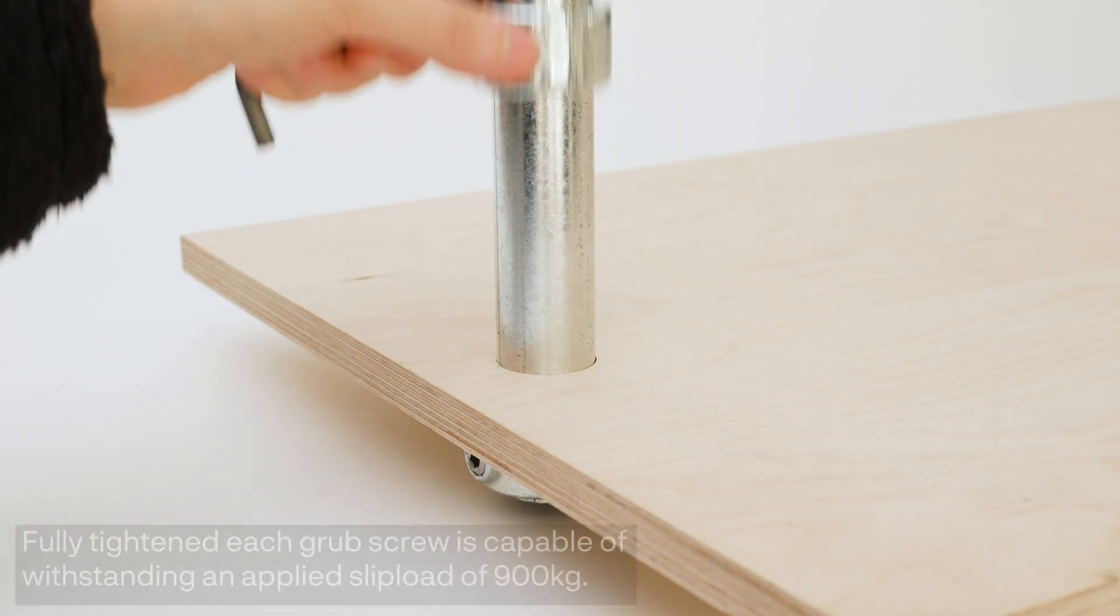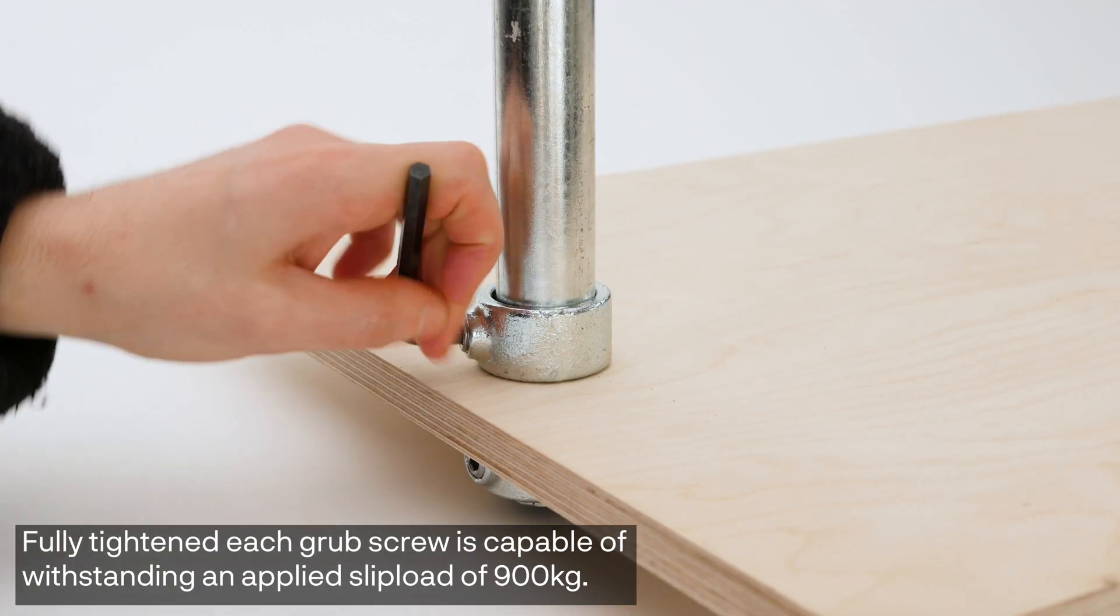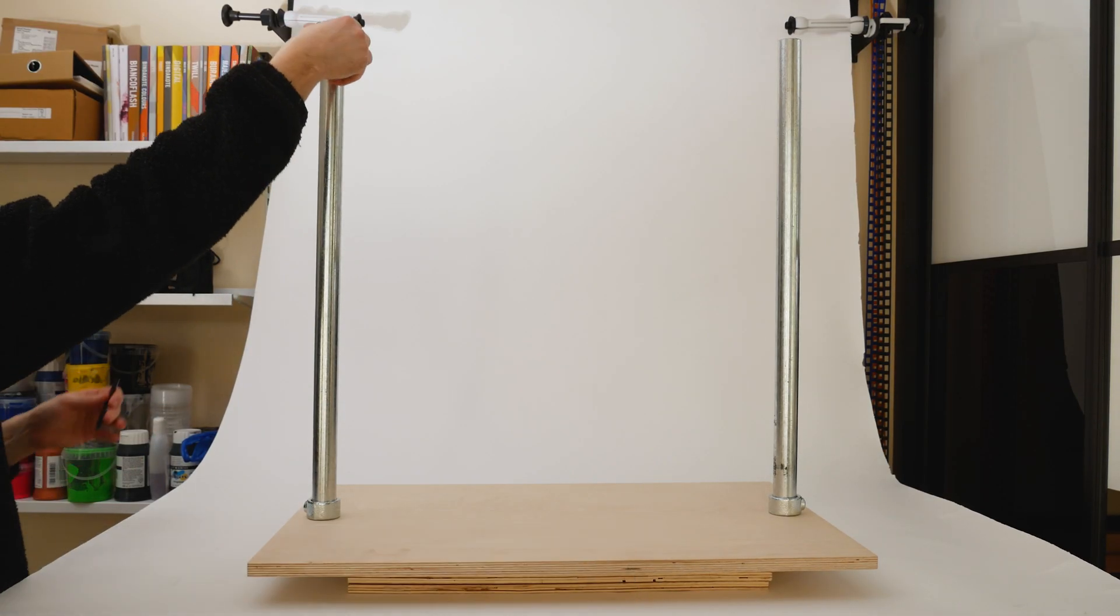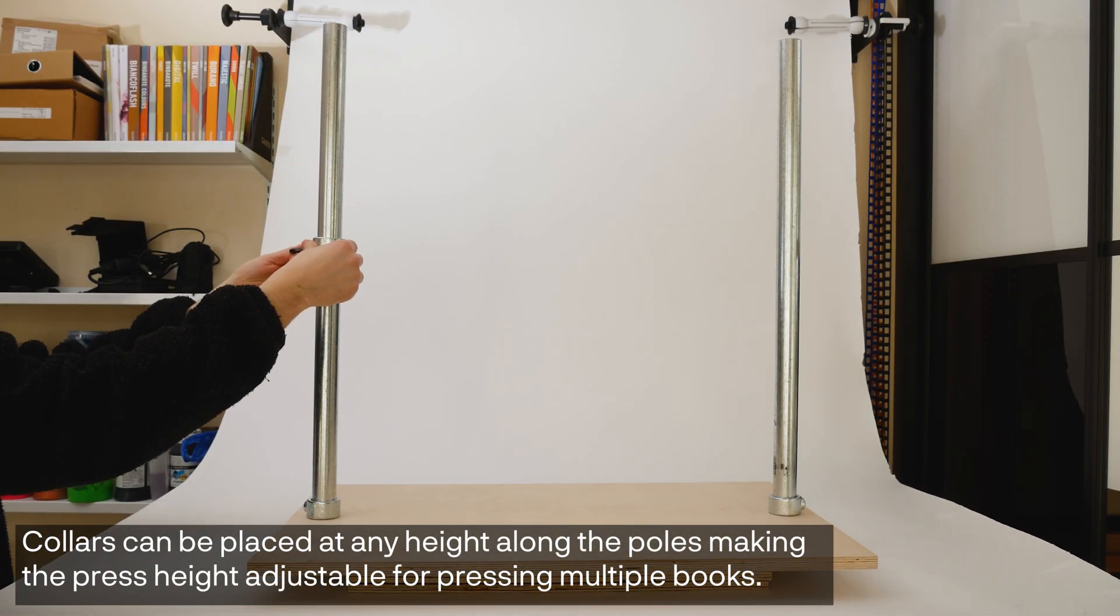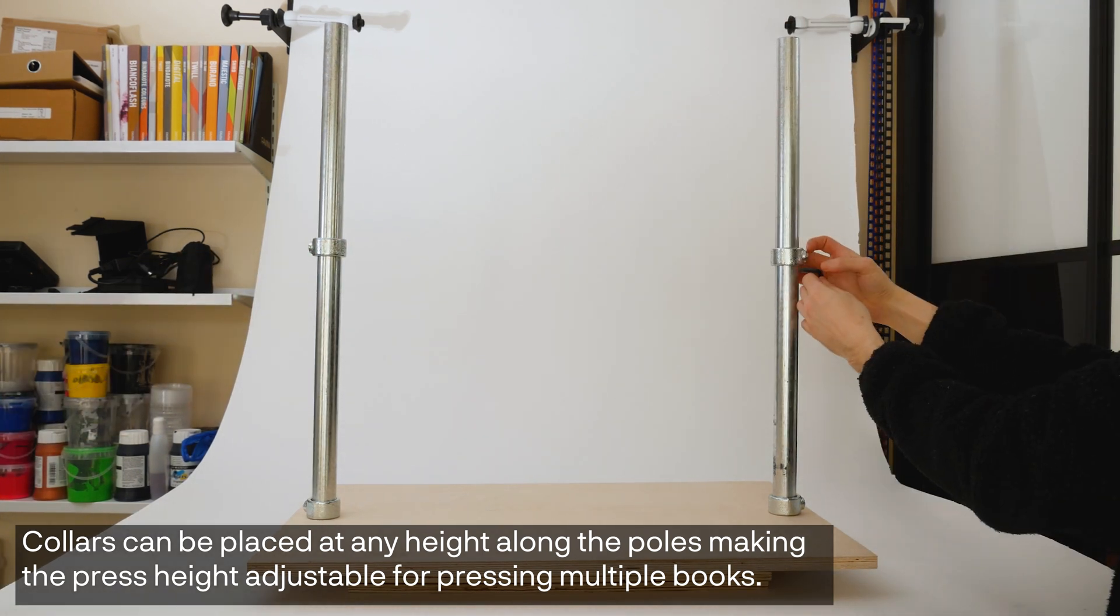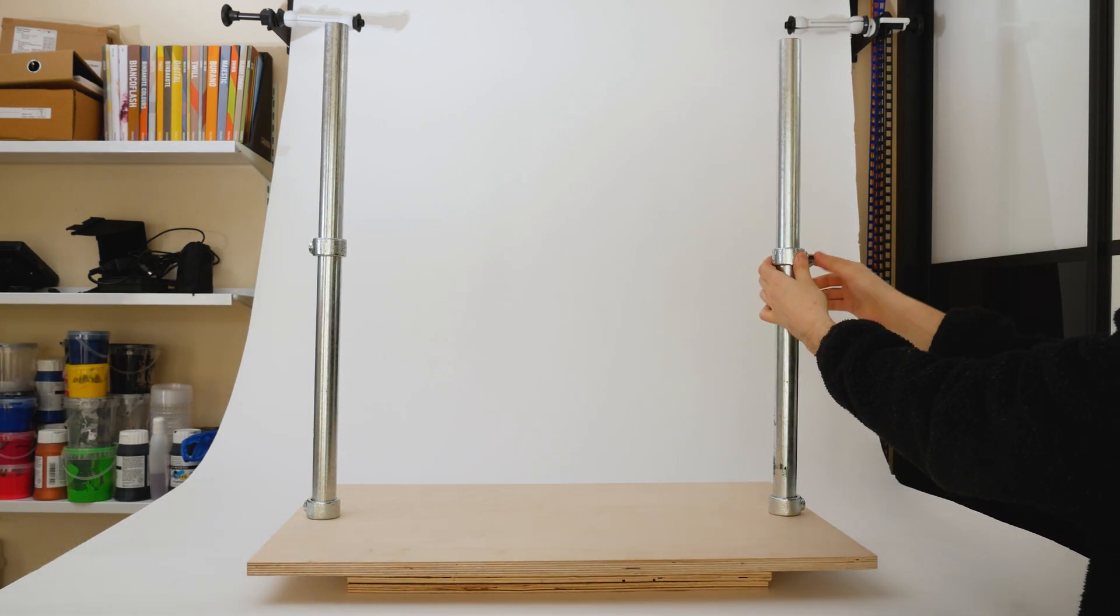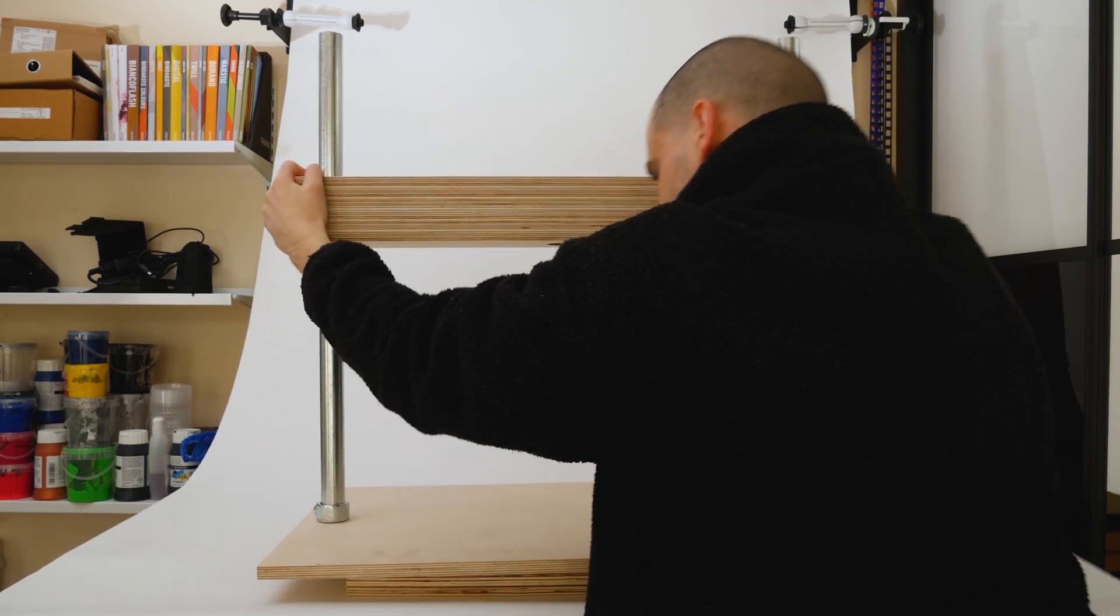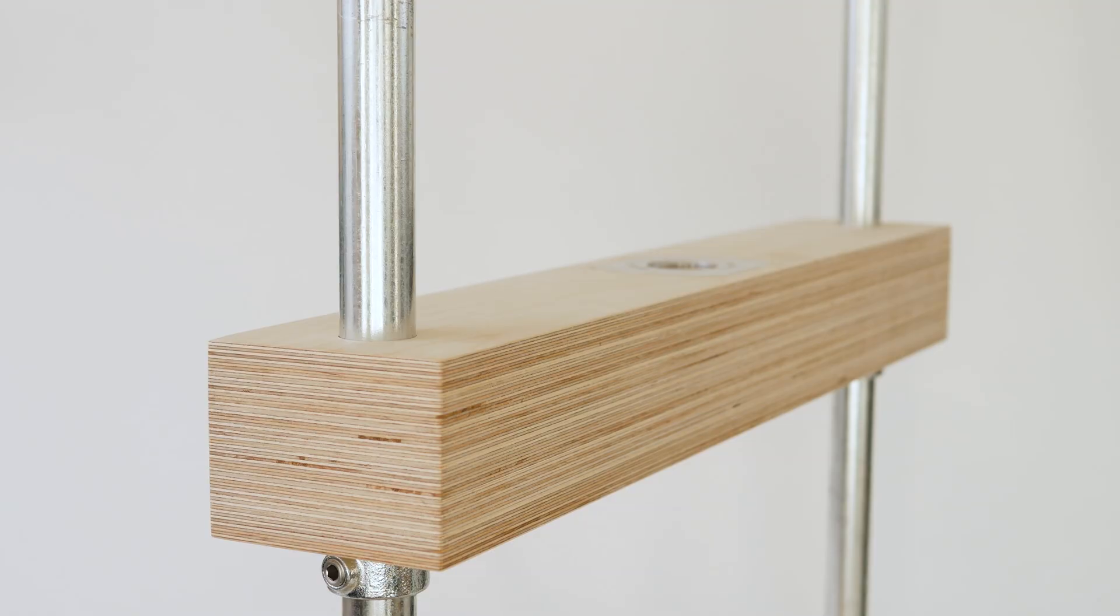The assembly is very simple thanks to these collars and they've got a really high slip load of 900 kilograms. So it's more than enough for what I'm going to be doing with this press. And you can put these at any height along the poles. So if you did have a really big job and you wanted to press loads of books, stack them all on top of each other, you can just move that main housing up and down and you can adjust the height.